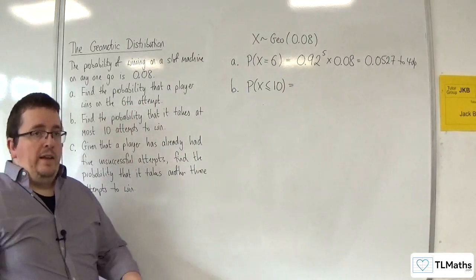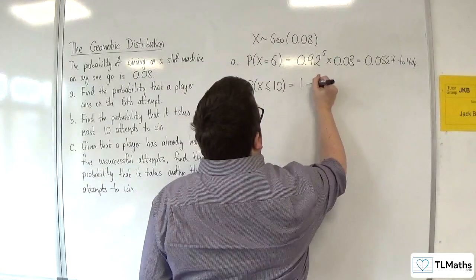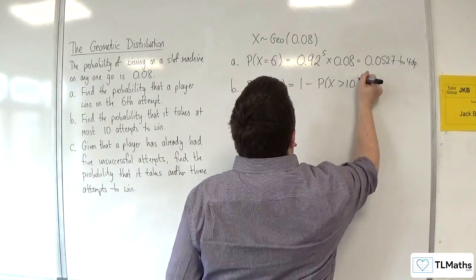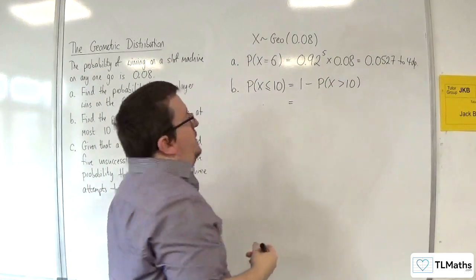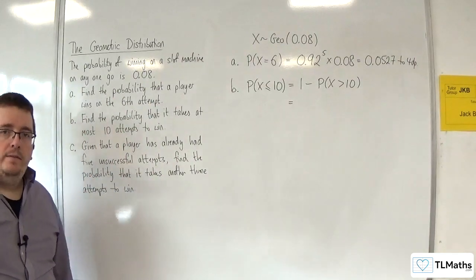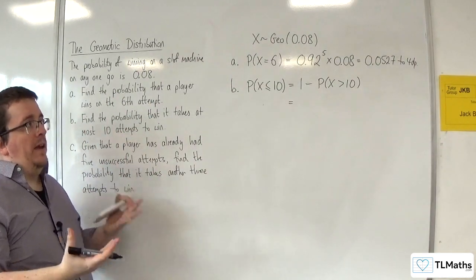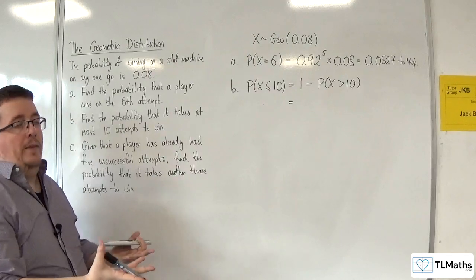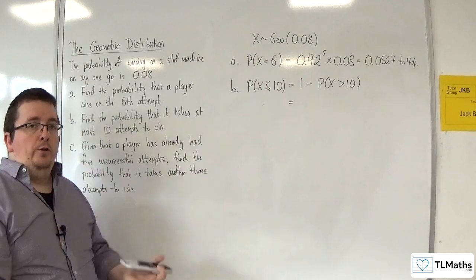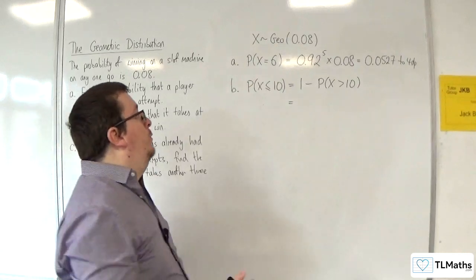So, that is one take away the probability of X being greater than 10. Now, the probability of X being greater than 10 is the same as saying, what's the probability of the player losing on all of the first 10 goes?